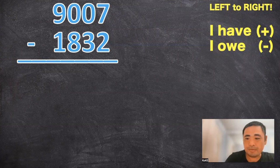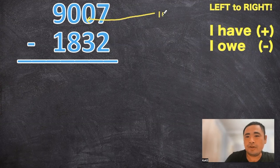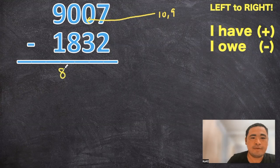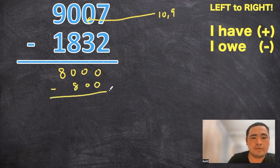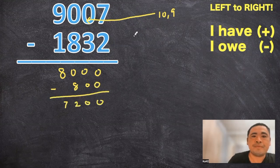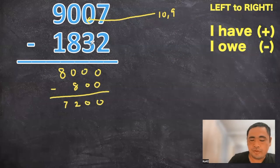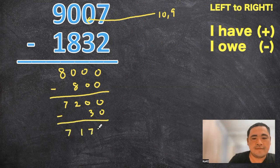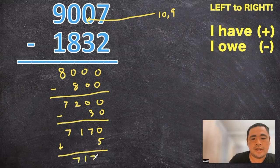Alrighty. Does anybody get super confused when they're subtracting double zeros in a problem and you don't know if you're putting a ten or nine in place of the zeros? So let's practice the Singapore method one more time. I have nine thousands. I owe one thousand. I still have eight thousands. I have zero hundreds. I owe eight hundreds. I still owe eight hundreds. Mental math seven thousand two hundred. I have zero tens. I owe three tens. I still owe three tens. Mental math seven thousand one hundred and seventy. I have seven ones. I owe two ones. I still have five ones. Mental math seven thousand one hundred and seventy five.